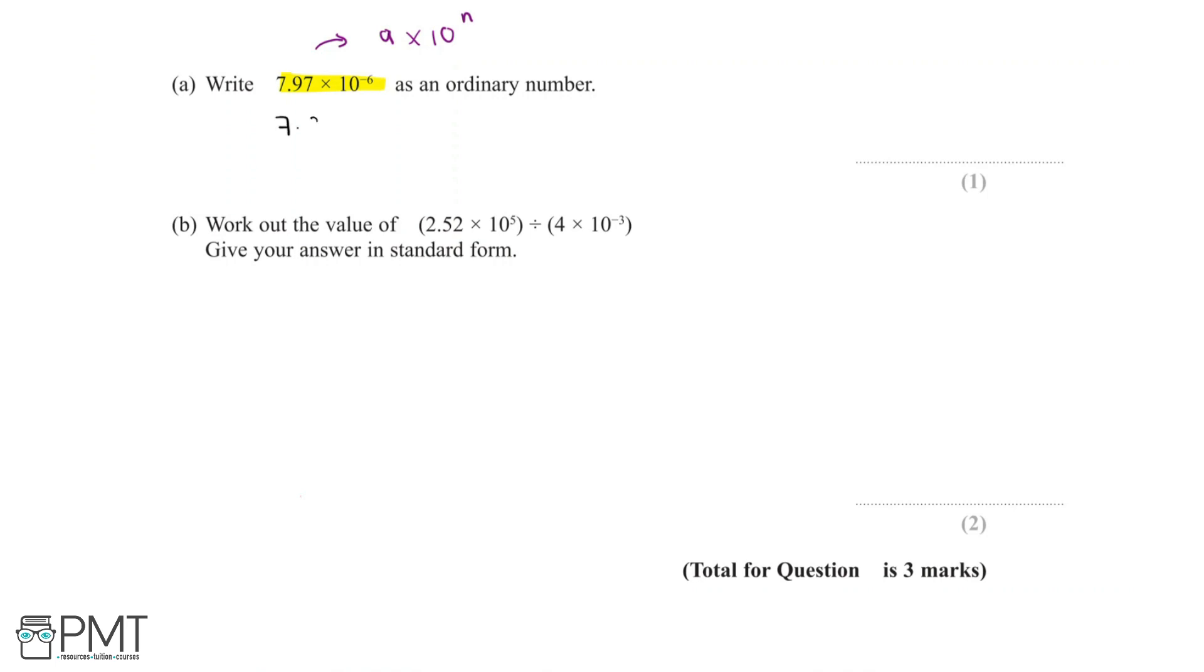We start with 7.97 × 10^-6. Since we know this number is getting smaller, the decimal point is moving 6 places to the left because it's minus 6.